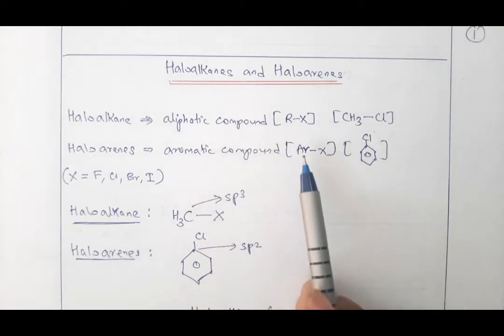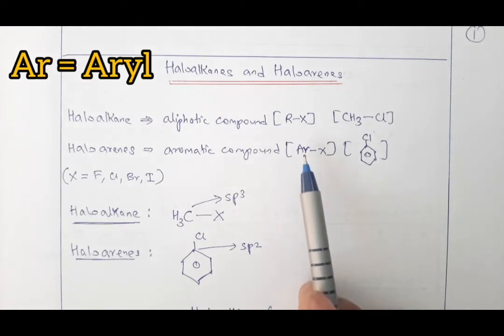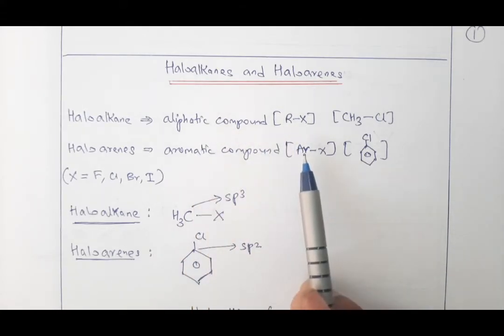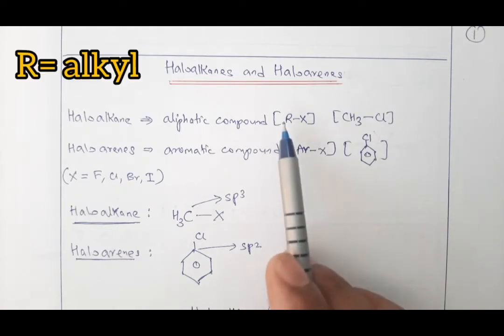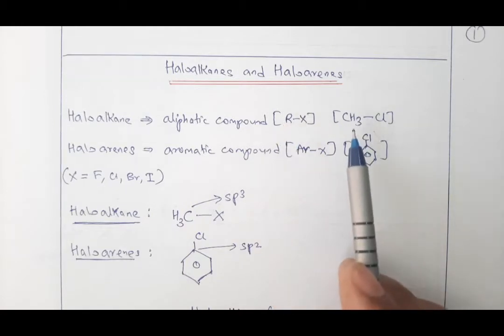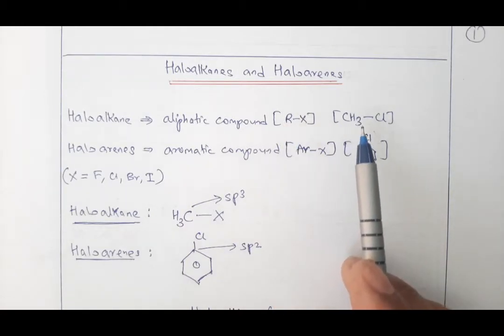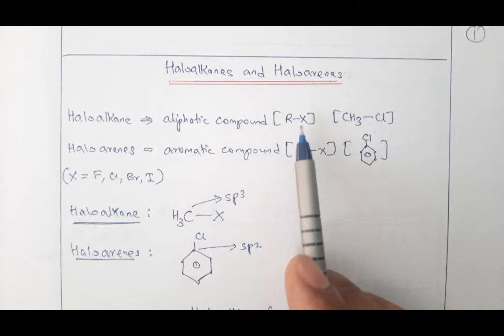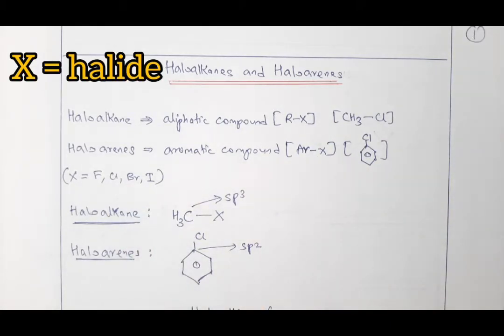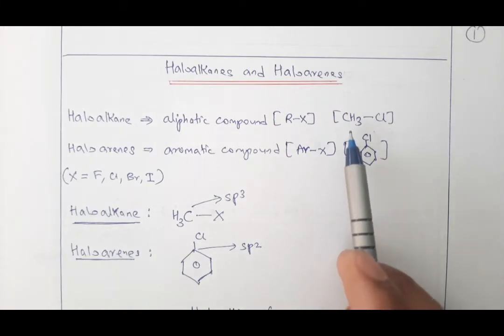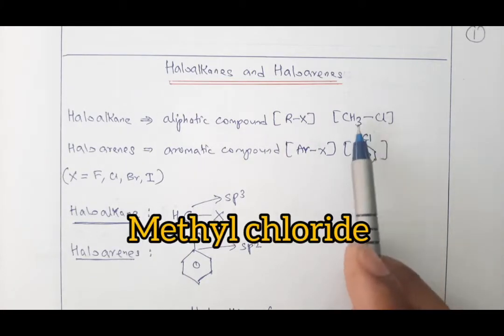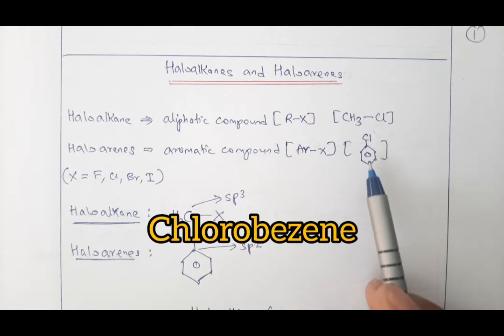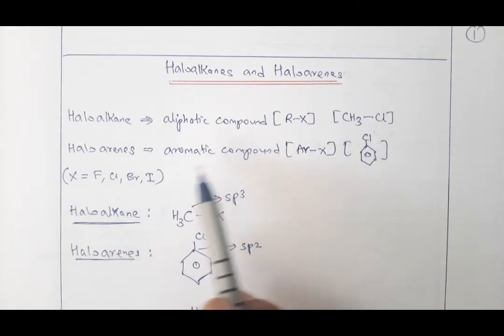The aromatic group is represented by Ar, which stands for the aryl group — a benzene ring. The aliphatic group is represented by R, the alkyl group, which includes methyl, ethyl, and so on. This is an example of a haloalkane, and this is an example of a haloarene. The X you see here can be replaced with fluorine, chlorine, bromine, or iodine — giving names like methyl chloride, methyl fluoride, methyl bromide, methyl iodide, or chlorobenzene, fluorobenzene, bromobenzene, and iodobenzene.